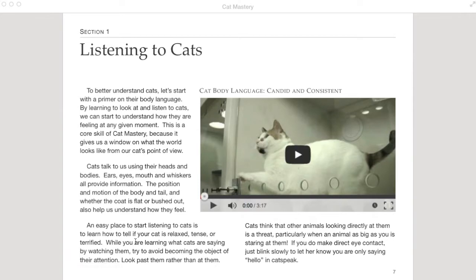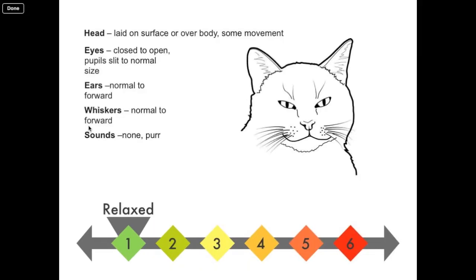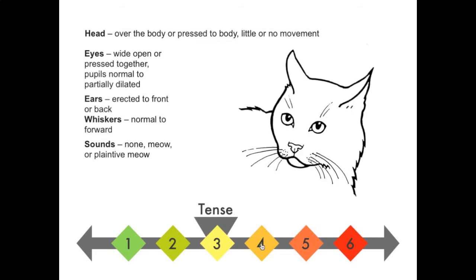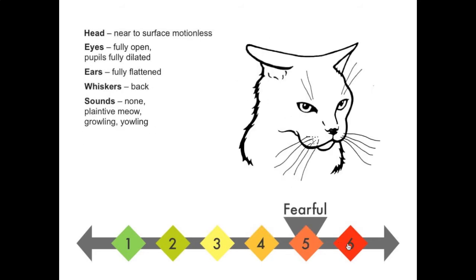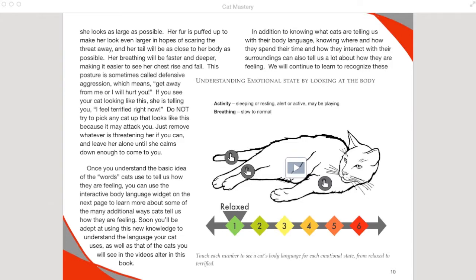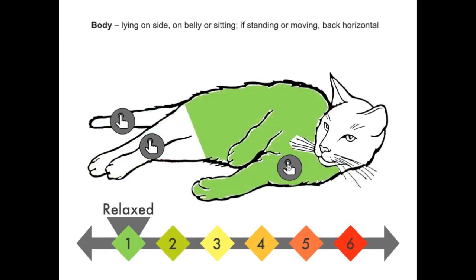If we look at this section in iBooks, we can see an embedded video about cat behavior. In the interactive widgets for this section, the reader can cycle through the cat's moods. There is an illustration for each mood and a description of the cat's behavior. In the body posture widget, the reader can highlight different sections of the cat's body within each mood.